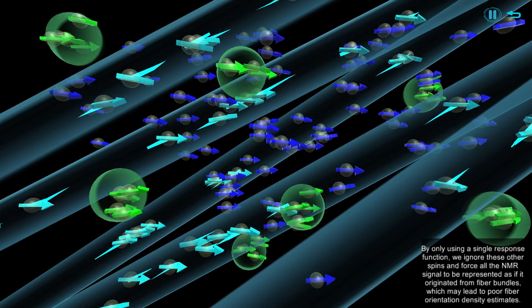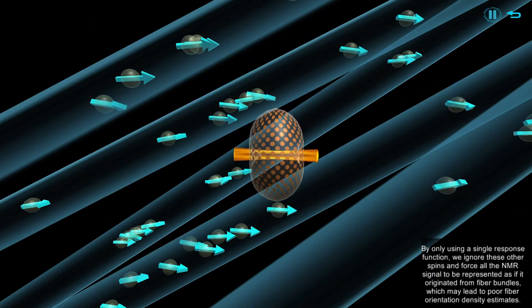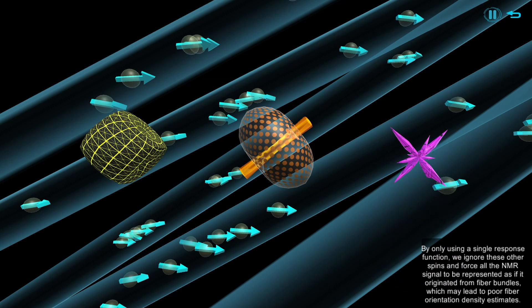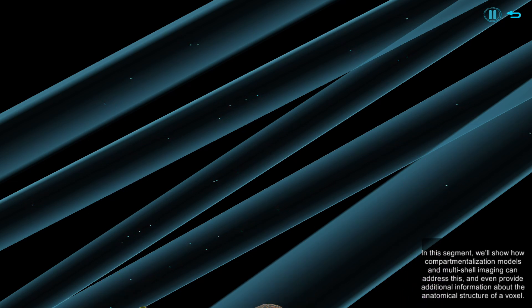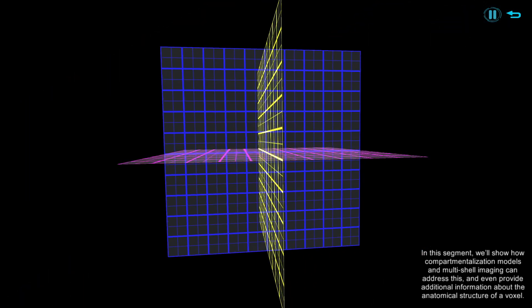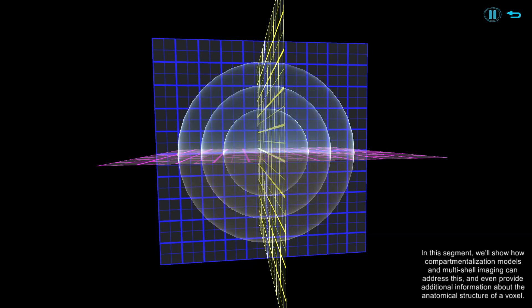By only using a single response function, we ignore these other spins and force all the NMR signal to be represented as if it originated from fiber bundles, which may lead to poor fiber orientation density estimates. In this segment, we'll show how compartmentalization models and multi-shell imaging can address this, and even provide additional information about the anatomical structure of a voxel.